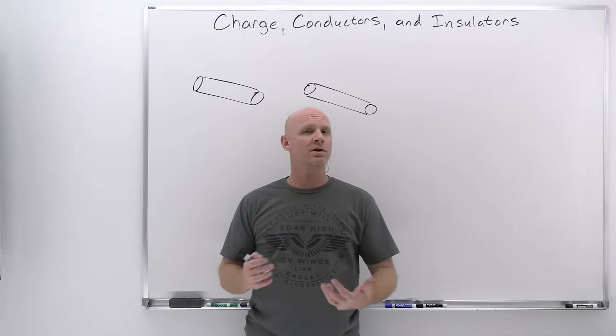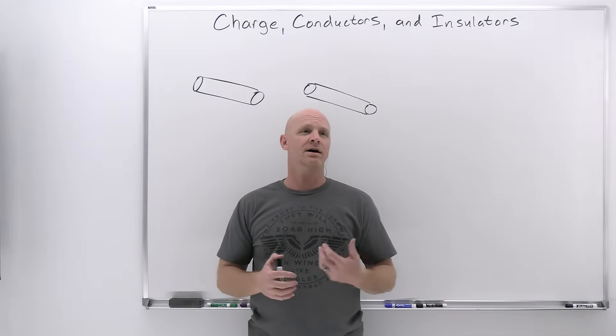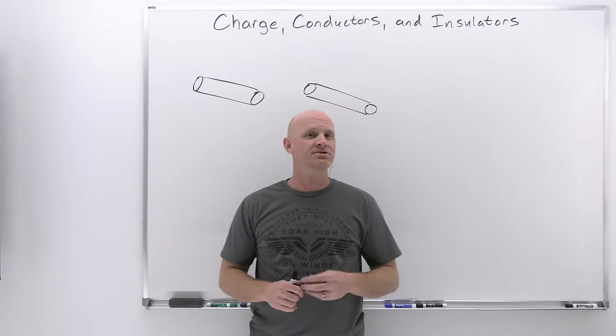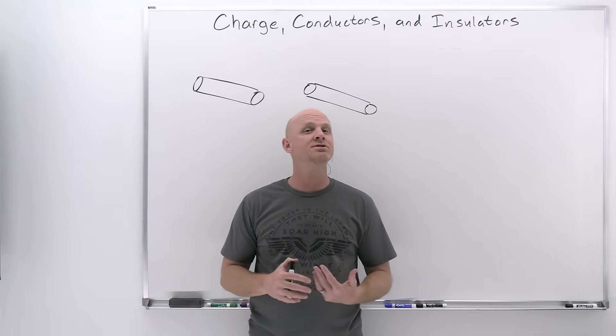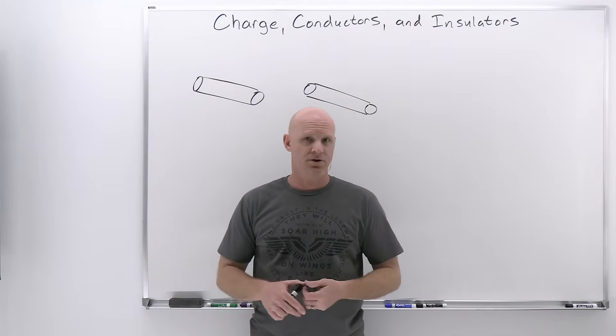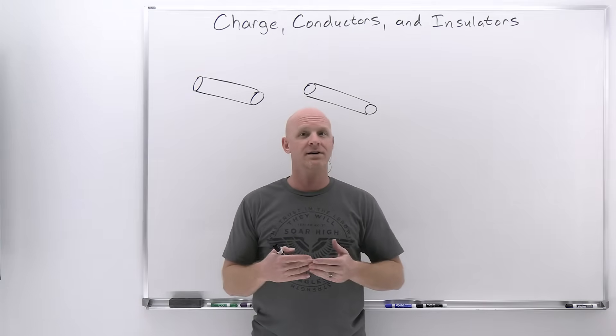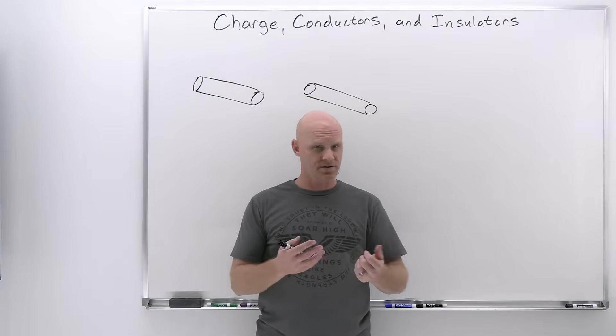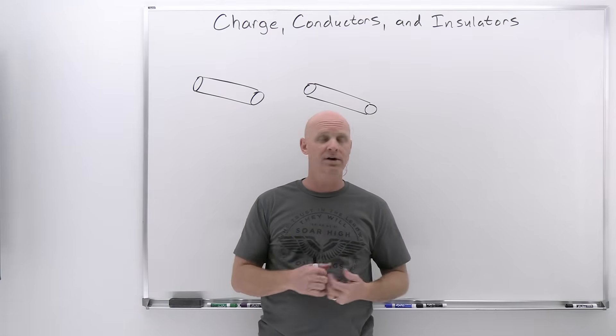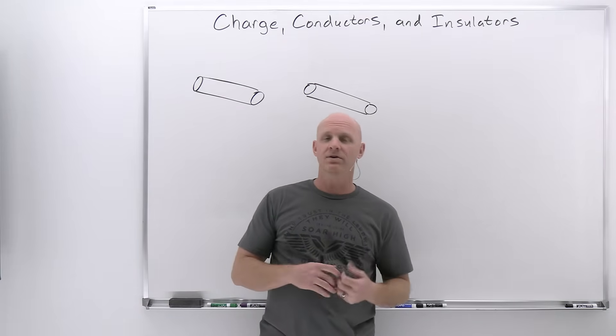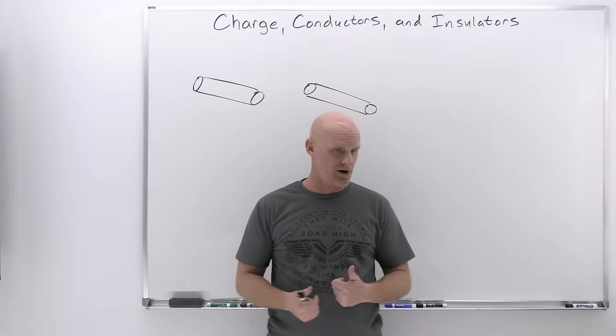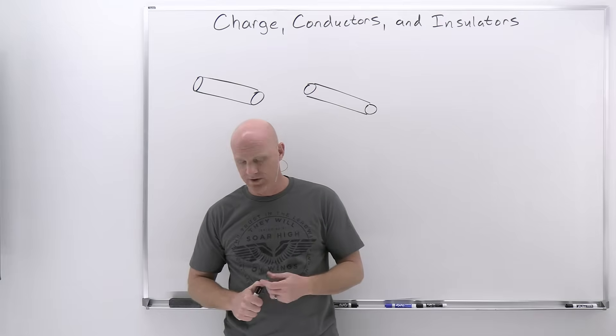Charging just means imparting a charge to an object. This typically happens one of two primary ways. The first is charging by conduction, when two objects come into contact, and because of a difference in charge there's going to be a flow of electrons from one to the other, typically from the more negative to the more positive. There's going to be a flow of electrons, typically if they're in contact long enough, until they have the same charge.